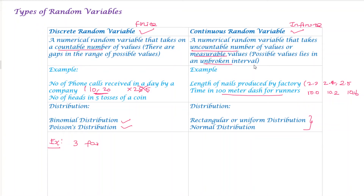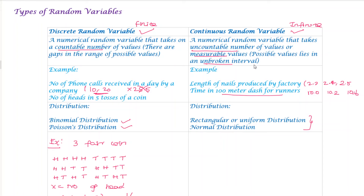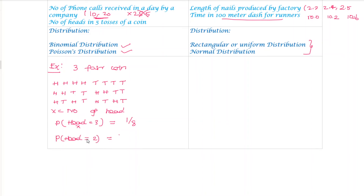Now for a discrete random variable example, we toss three fair coins and count the number of heads. We get: x equals 3 (three heads) with probability 1/8; x equals 2 (two heads) with probability 3/8; x equals 1 (one head) with probability 3/8; and x equals 0 (no heads, two tails) with probability 1/8.